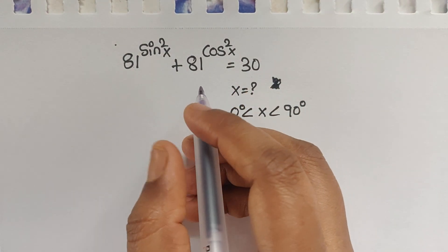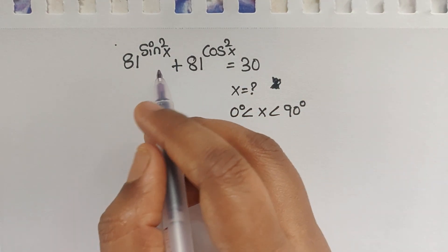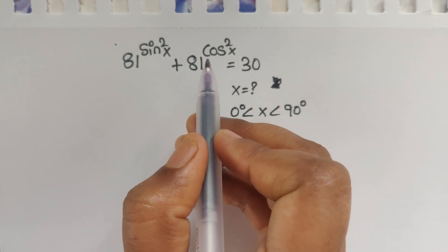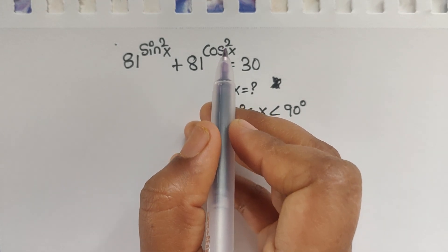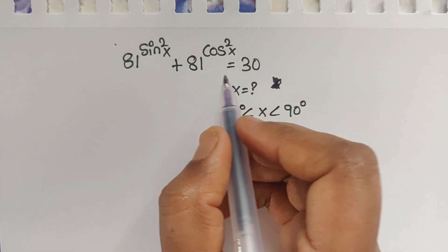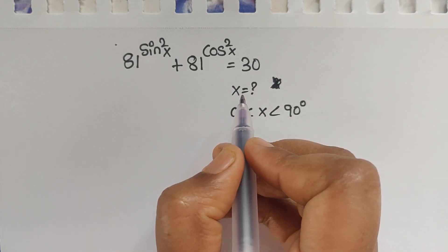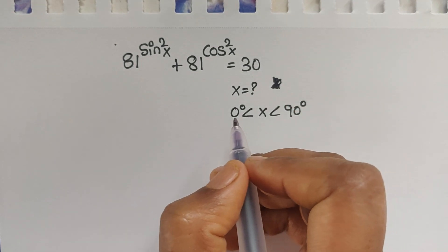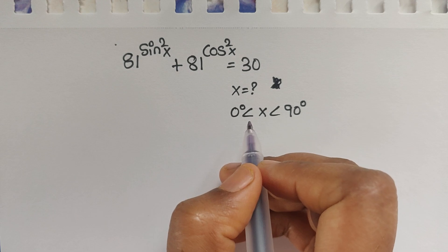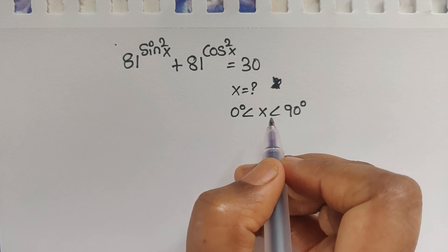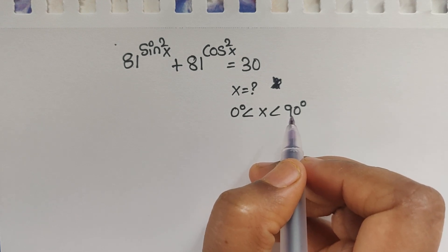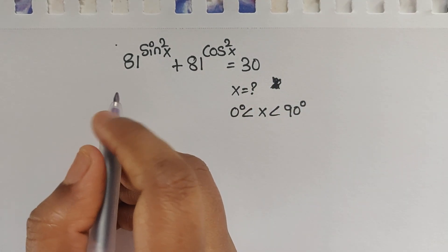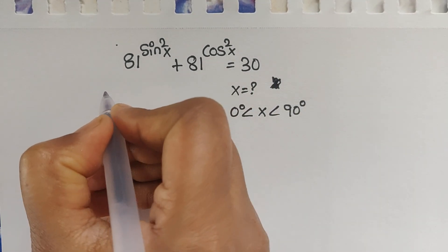Hello everyone, welcome back to our channel. Here we have one problem: 81 to the power of sin²x plus 81 to the power of cos²x equals 30. In this problem we have to find the value of x, given the condition that 0 degrees is less than x, and x is less than 90 degrees. Let's see the solution.